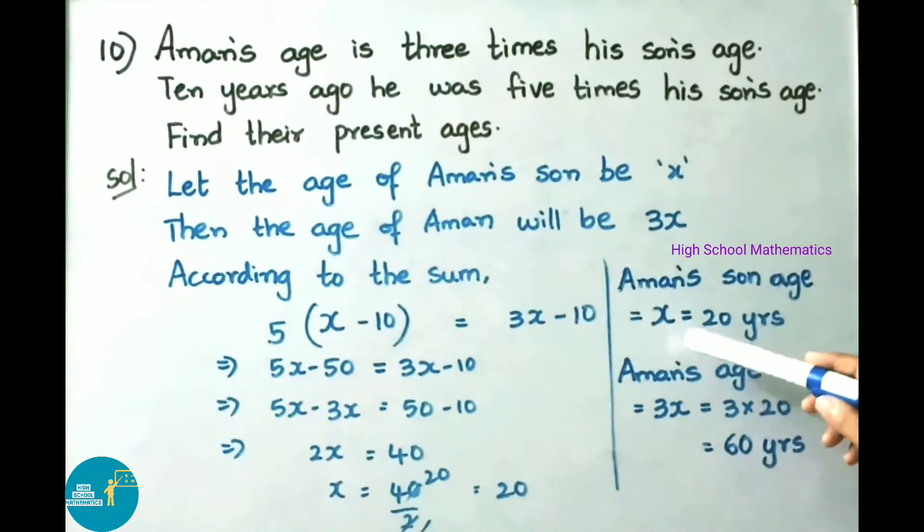Aman's son's age is x, that is 20 years. And Aman's age is 3x, that equals 3 into 20, that is 60 years. Therefore, Aman's age is 60 years and Aman's son's age is 20 years.